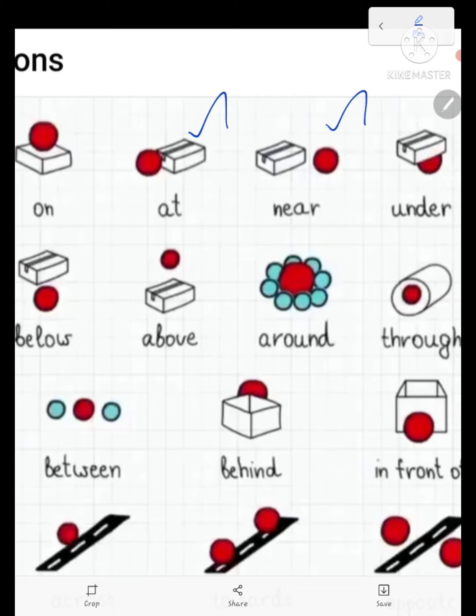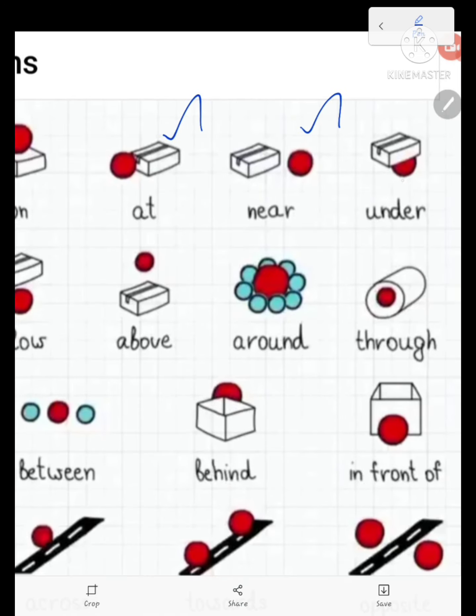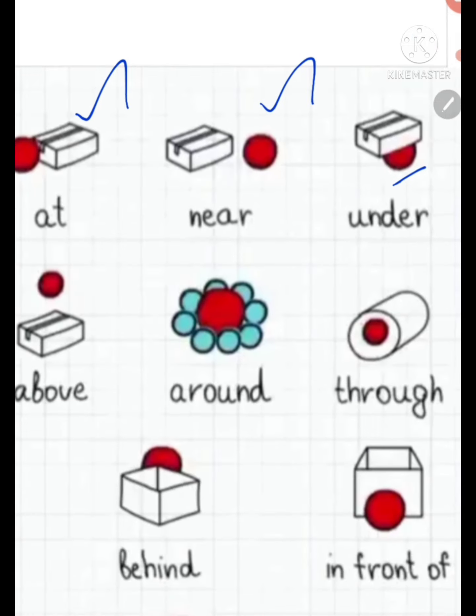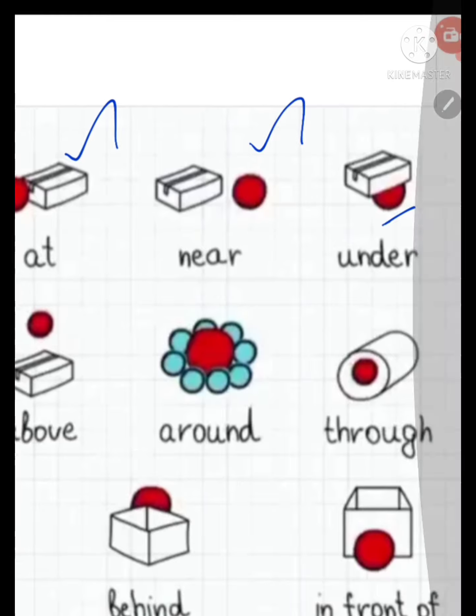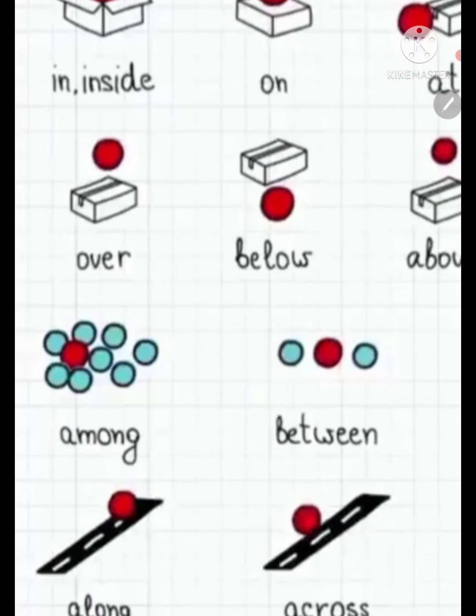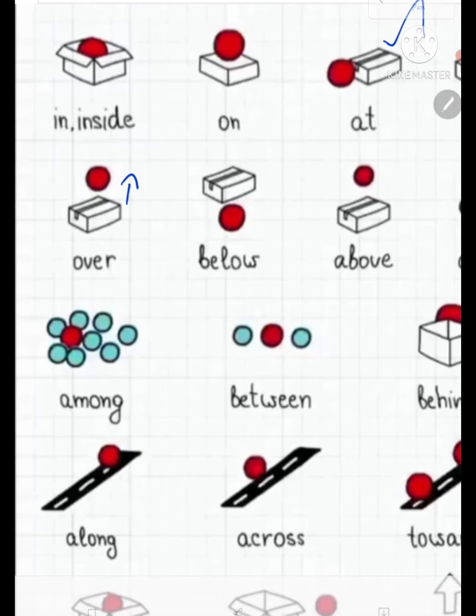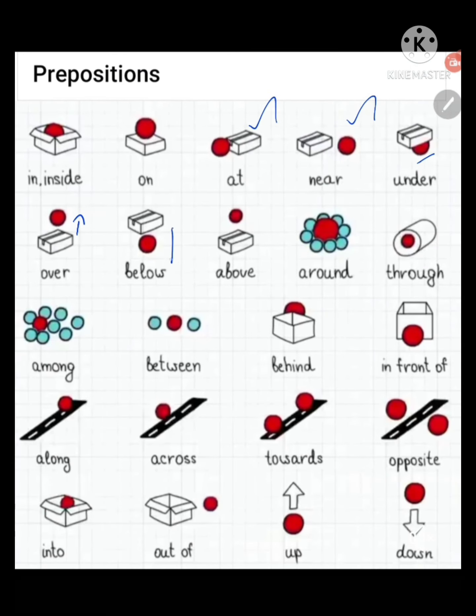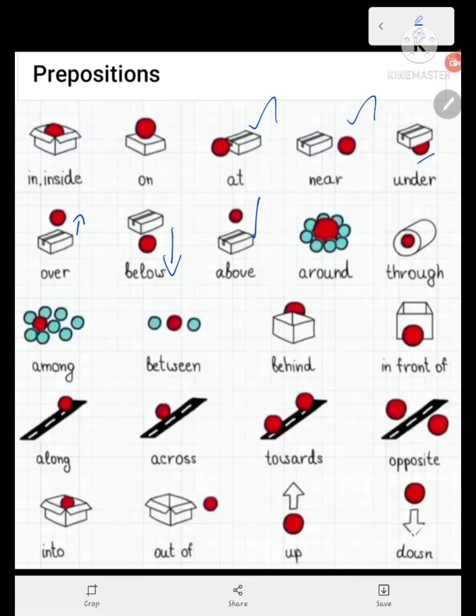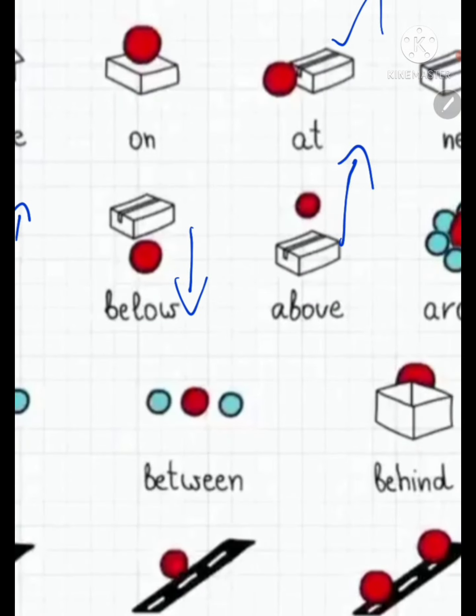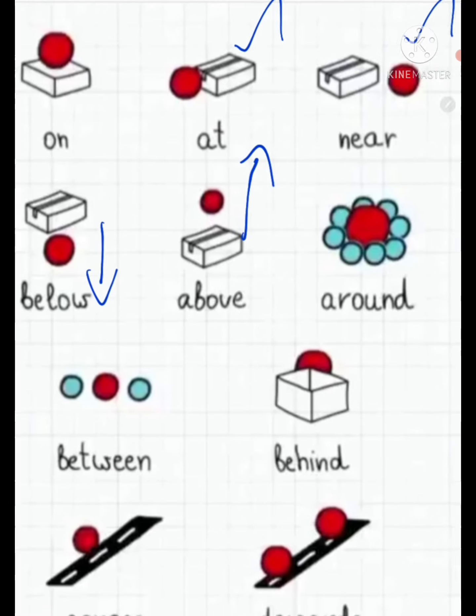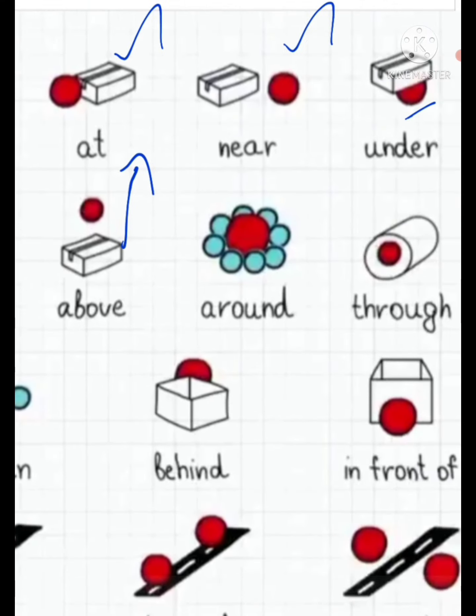It goes under the box. What is this under? Under and below, above, above and over. Next is around. Around means what? Sutri irikki radhi. So this is the red ball is in the blue ball circle.